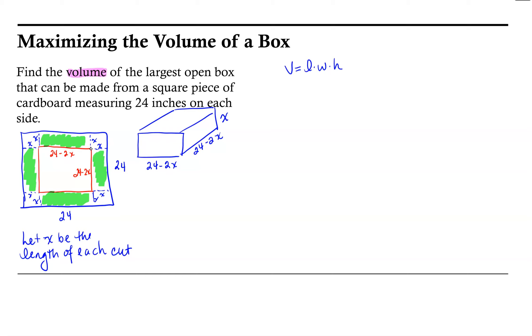In our case, our length is 24 minus 2x, and our width is 24 minus 2x. And our height is x. So the volume of our box can be represented by 24 minus 2x times 24 minus 2x times x. Or more simply, 24 minus 2x squared times x.